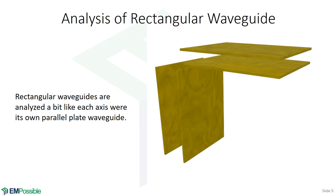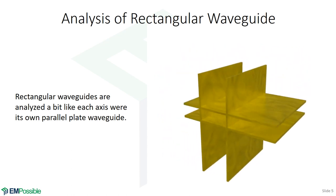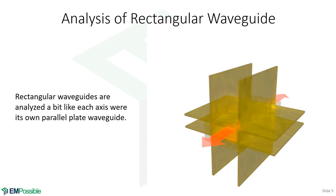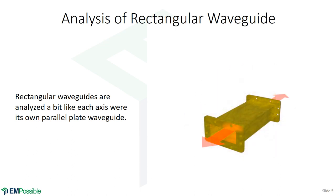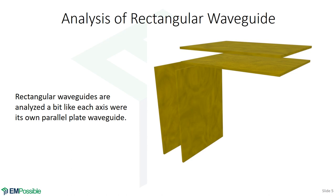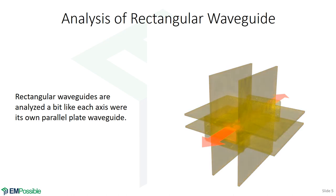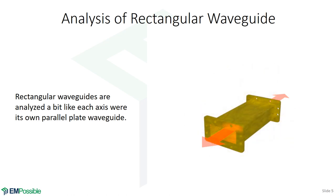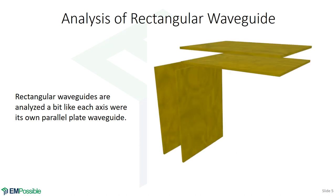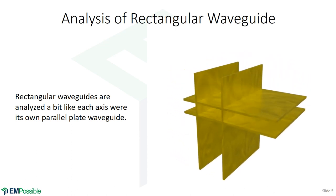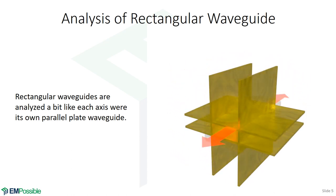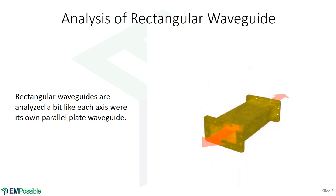This is a great waveguide to analyze after parallel plates, because the rectangular waveguide is very much like two parallel plate capacitors. We have two parallel plates — one confining vertically, the other horizontally. If we overlap them, we get a little channel down the middle, which is very much like our rectangular waveguide. Almost all the concepts we discussed in parallel plates will arise again.